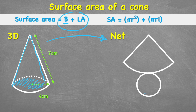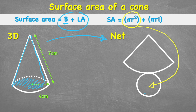When working on the surface area of a cone specifically, we can break this formula down into two parts. This first part, pi r squared, is going to give us the surface area of this circle. And then this second part, pi times radius times the lateral length — which is 7 centimeters here — is going to give us the area of this cone-shaped segment.